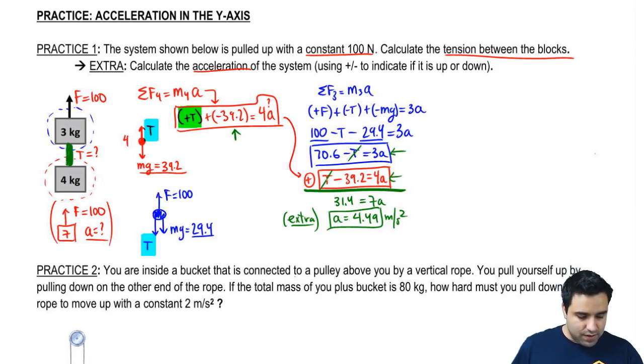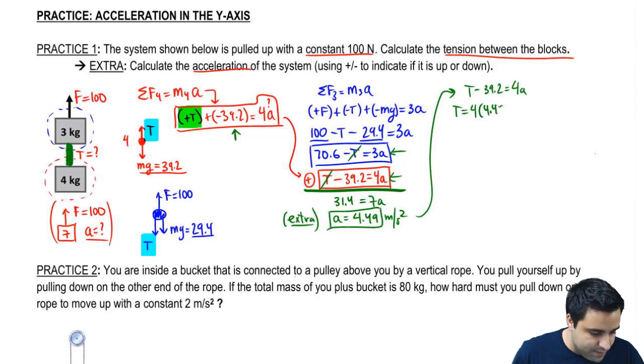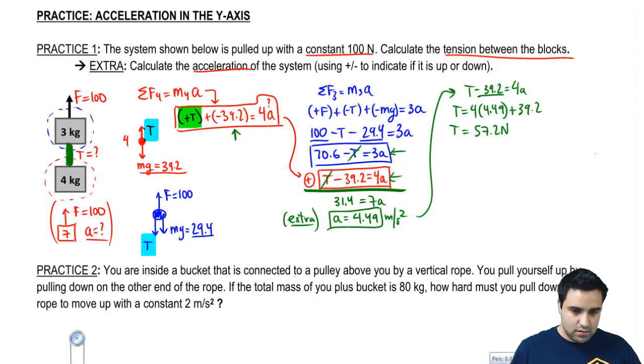So pick one. I'm going to go with the second one just because T is already positive here. So T minus 39.2 equals 4A. So T equals 4 times A, which is 4.49 plus the 39.2. And if you do all this, you get that it is 57.2 newtons. So that is your T and we're done.